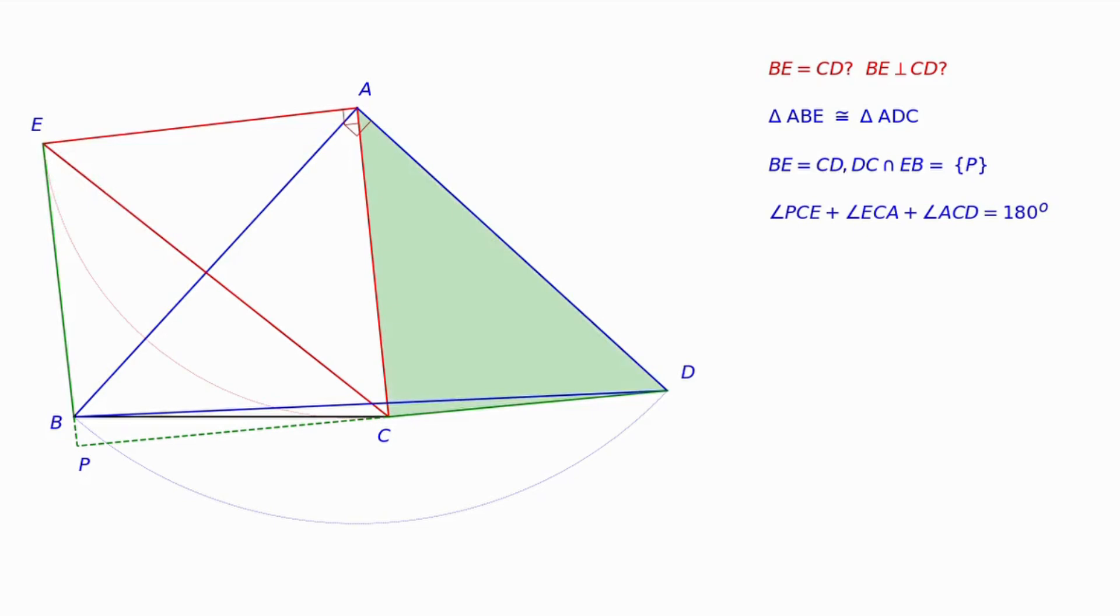In fact, as a straight angle, PCD can be expressed as the sum of the angles PCE, ECA, and ACD and equals 180 degrees. The angles BE and ACD are equal, because the triangles ABE and ADC are congruent, as shown earlier.